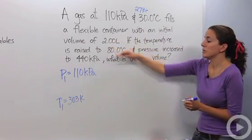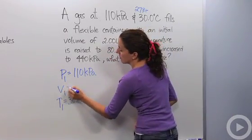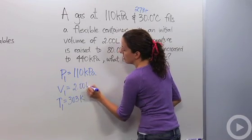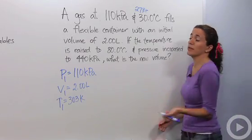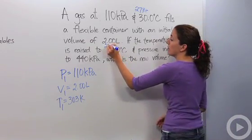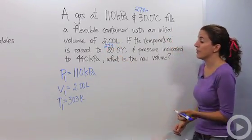And our initial volume is 2 liters, so I'm going to say V1 equals 2 liters. Okay, then I continue reading. If the temperature is raised to 80 degrees Celsius, again we want it in Kelvin, so we're going to add 273, making it 353.